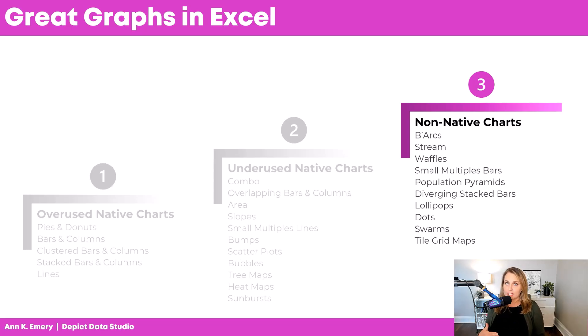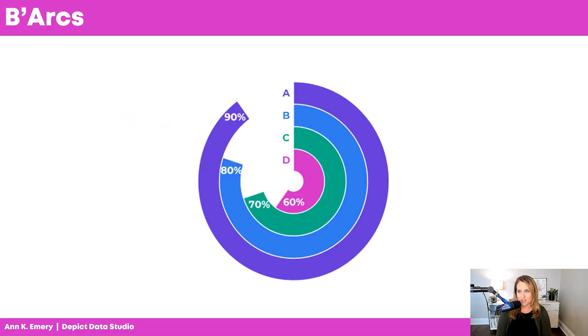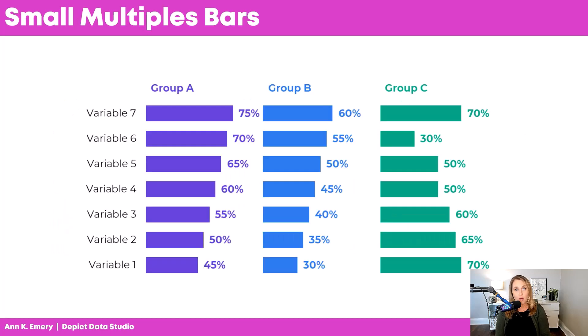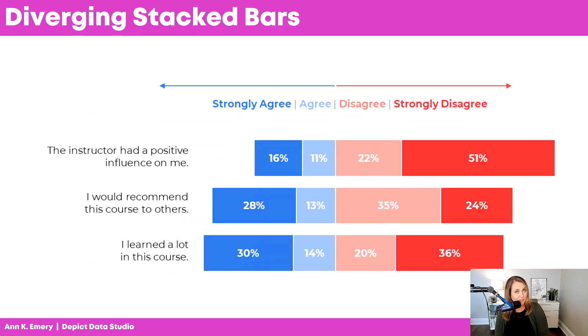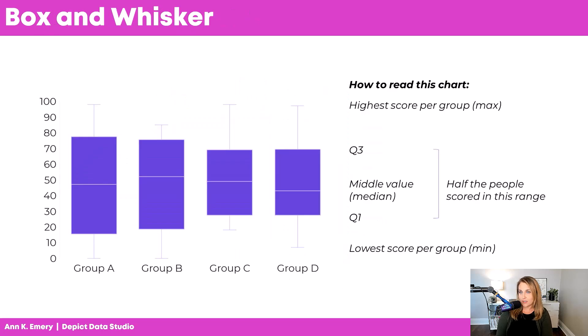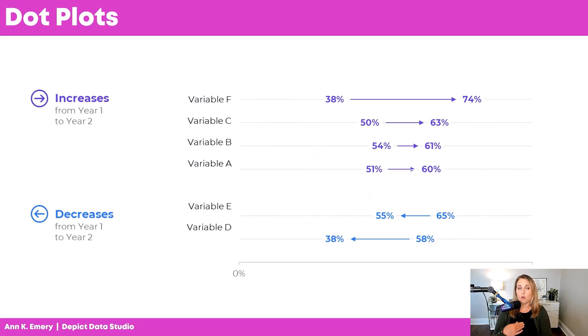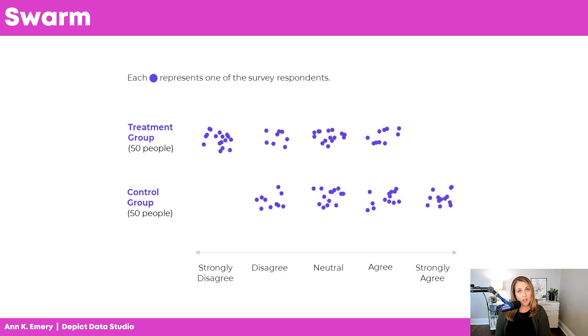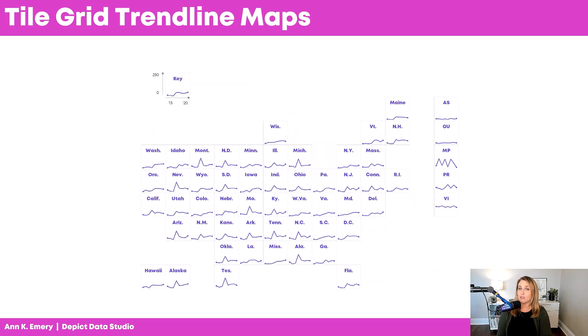After you've made some beginner and intermediate charts, you're going to be ready for level three: the non-native charts. Non-native means when you go to the insert tab and look for that chart type, it's not going to be there. But that doesn't mean it's not possible — it just requires some behind-the-scenes magic skills. These charts include bark charts, bar arc charts, waffle charts (which are like square pies), small multiples bar charts for disaggregating subgroups, diverging stacked bars, population pyramids (which are two histograms tilted on their side so you can see if distributions are symmetrical between groups), box and whisker diagrams, lollipop charts, dumbbell dot plots with arrows to show directionality, swarm plots for small ends, tile grid heat maps, and tile grid trendline maps.